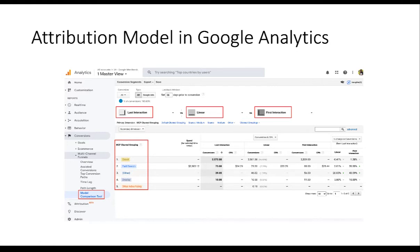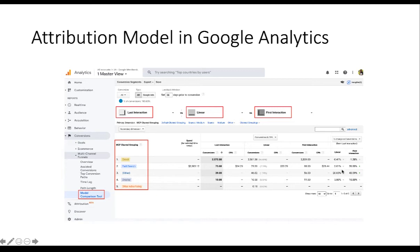The second highest channel is paid search — the Google Merchandise Store runs some ads, though fewer than a site selling brand-new products would need. Display ads show fewer conversions than paid search, which is reasonable because display is targeted at brand building and awareness rather than direct conversion. Comparing the three models, linear assigns less attribution to direct traffic and slightly more to paid search and display, while first interaction assigns even less to direct and even more to paid search and display. The default lookback window is 30 days.